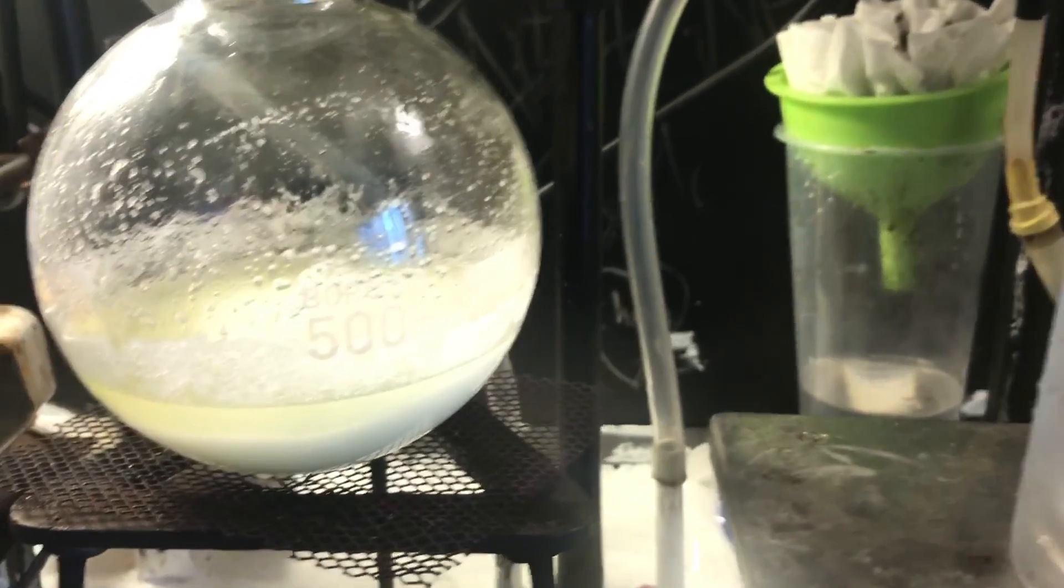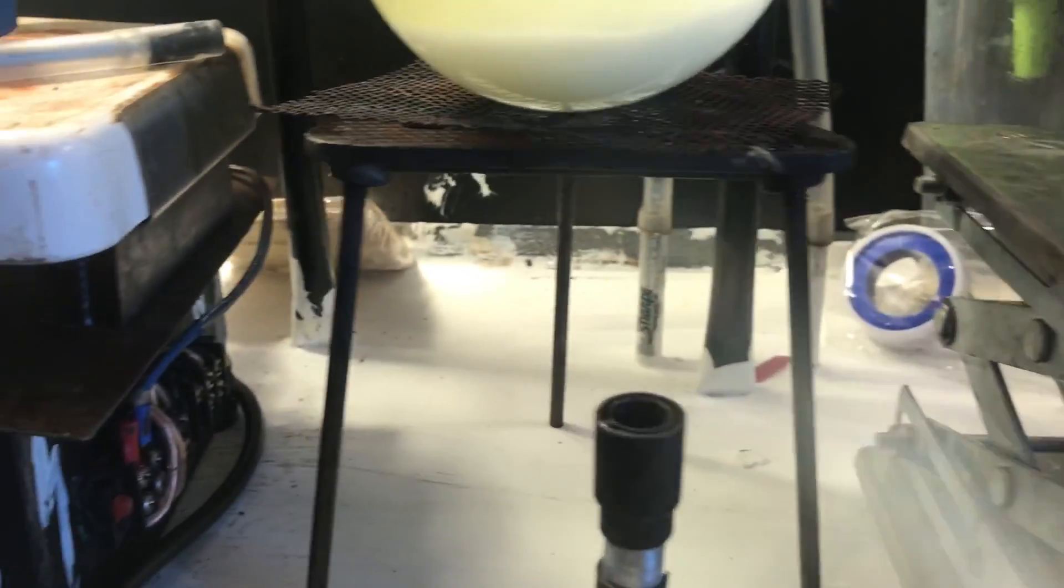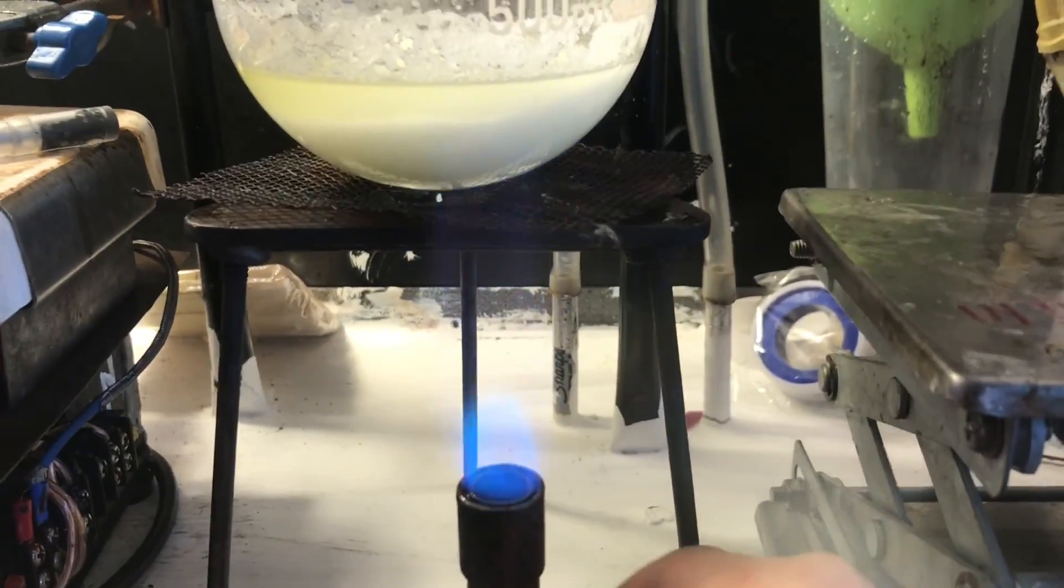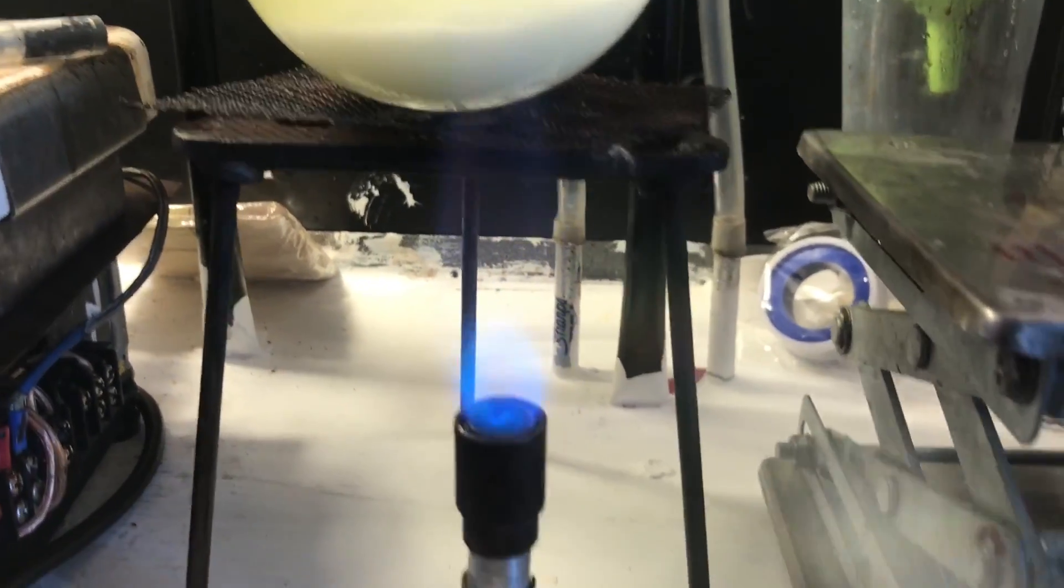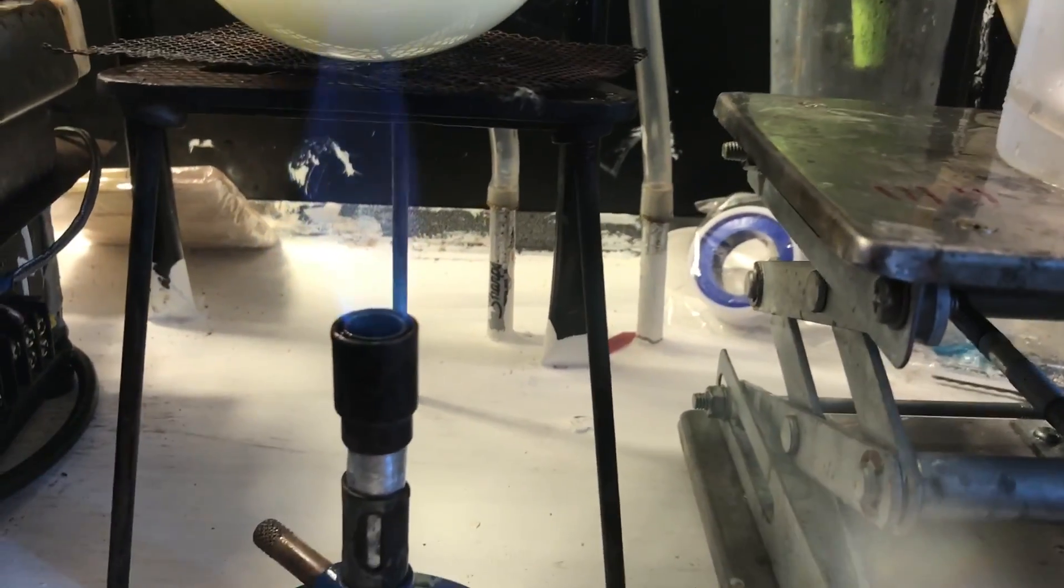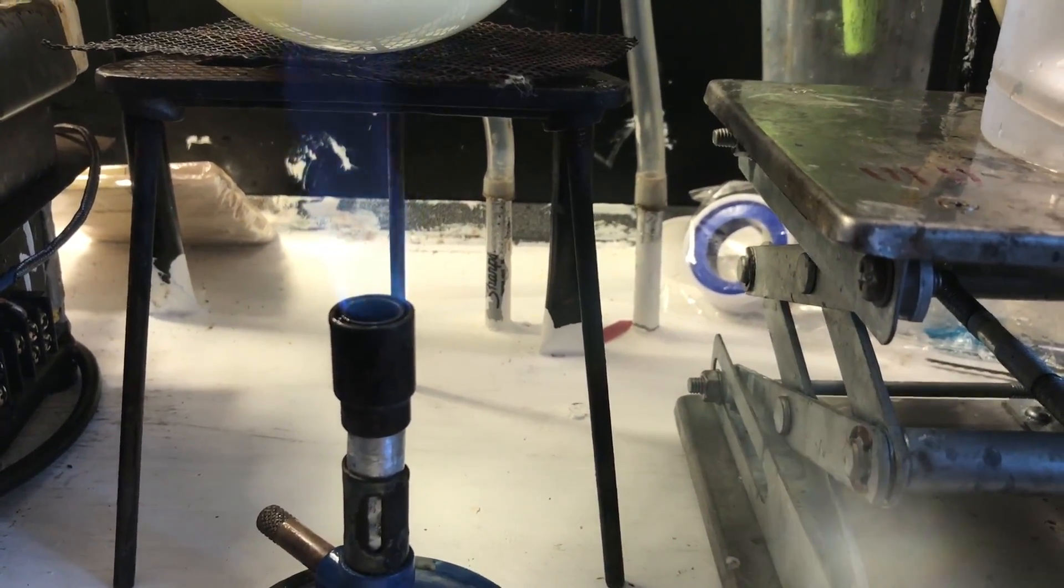As you can see, the gas rate has decreased, so we're gonna start heating it now. This is the part where you have to really be careful about foaming, because it really loves the foam. Ideally you'd put like a reflux condenser on top of this.